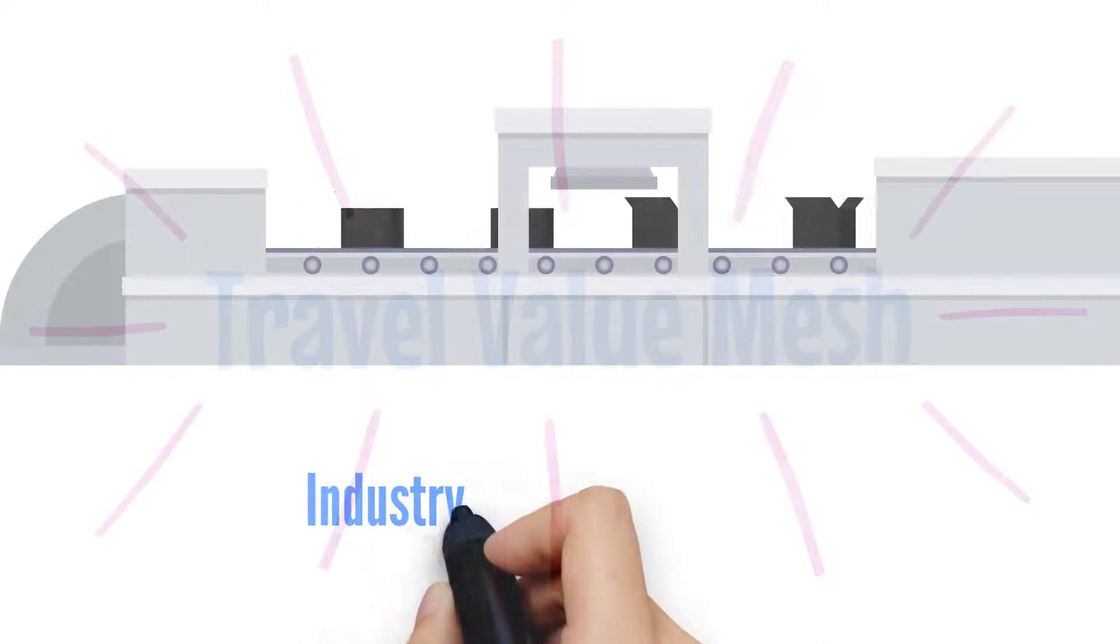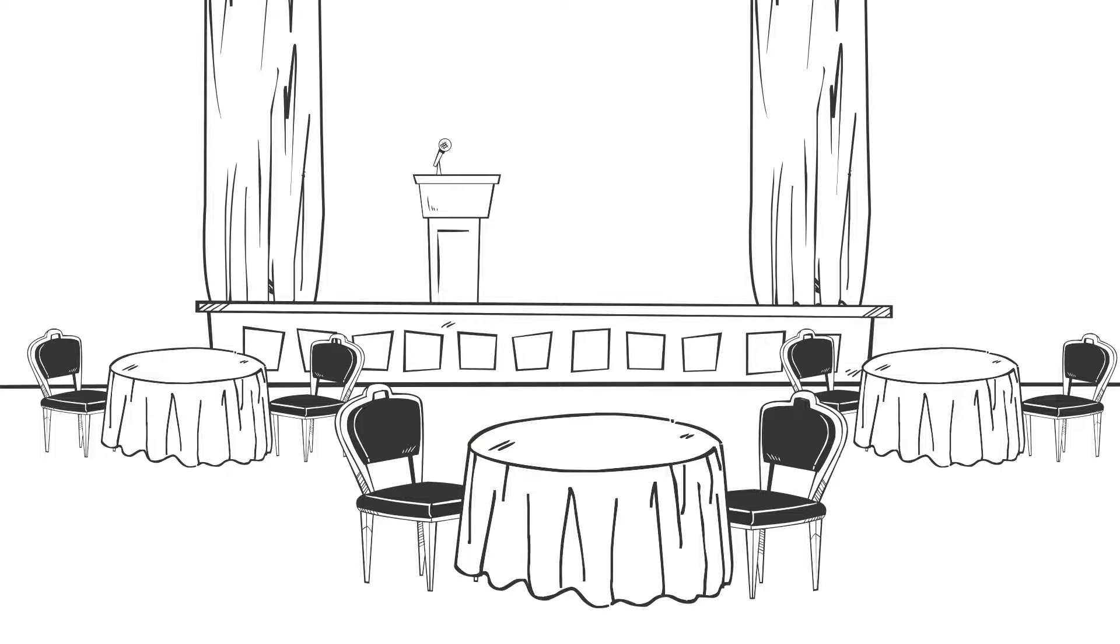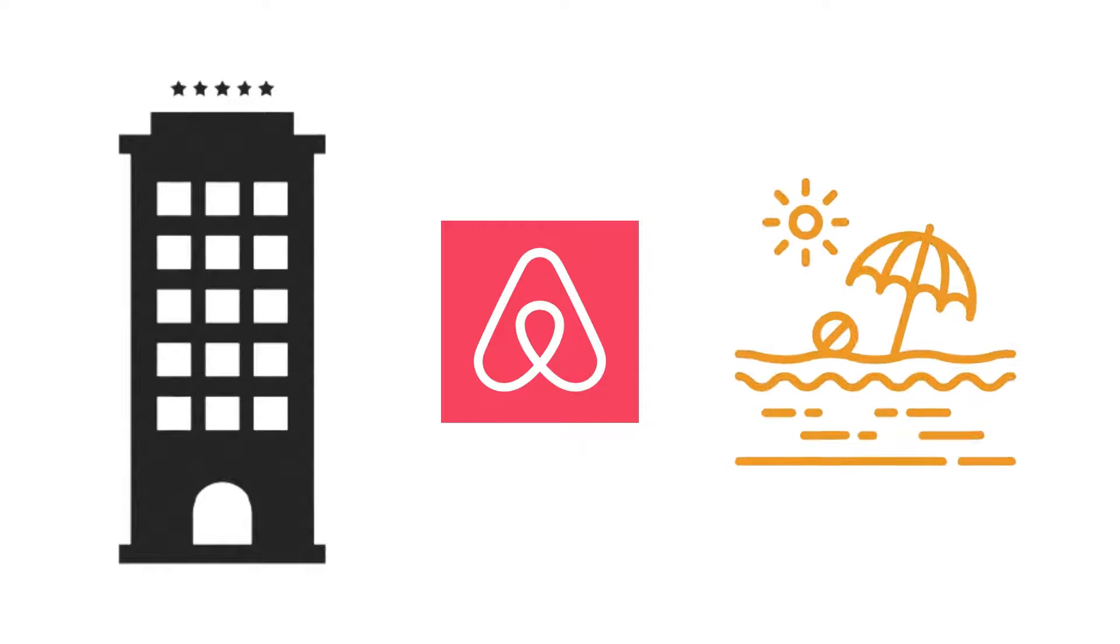The Travel Value Mesh is an industry-wide marketplace of travel-related service offering. It accelerates the introduction of services at any venue, be it a hotel, an Airbnb rental, or a beachfront resort.